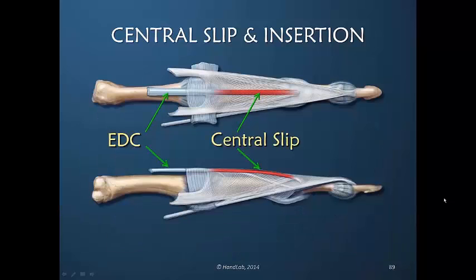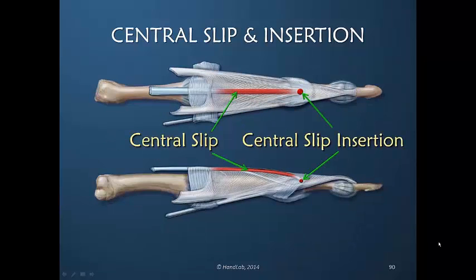So the extensor digitorum communis is not extending the PIP joint via the central slip alone. The tension on the central slip from the EDC is pulling proximally on the entire dorsal apparatus, and along with that proximal movement is tension on the central slip insertion. They are not separate — they work conjointly.